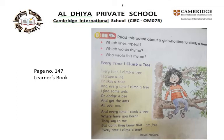Tree rhymes with me, and tree rhymes with bee as well. And get the ants all over me — bee and me also rhyme. Every time I climb a tree, where have you been? They say to me. But they don't know that I am free. Free and tree — these two words also rhyme.